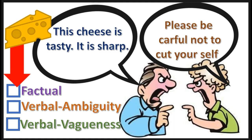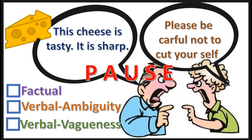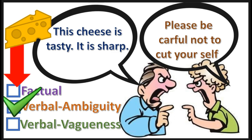Next practice problem — select the correct answer. Press pause, the answer will appear in three, two, one. That's right — verbal ambiguity. The word 'sharp' can have two different meanings.